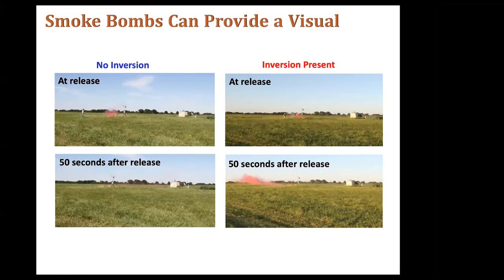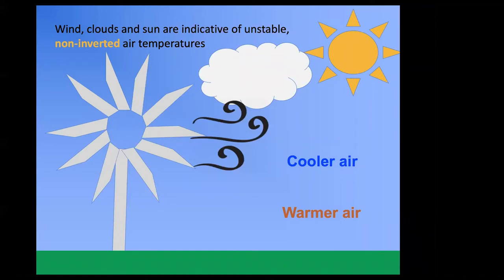Let's go into a little more detail about what inversions are. Sometimes it's easier to explain what inversions are not. Wind, clouds, and sun are all indicators that you do not have an inversion — this would be an okay time to spray. The sun warms the earth's surface, which warms the air near the surface. That warm air rises because it's less dense, then cooler air sinks and gets warmed and rises again. This cycling generates vertical mixing of warm and cool air, which results in wind and is usually capped by cumulus clouds at the top. These are all indicators that an inversion has not formed.